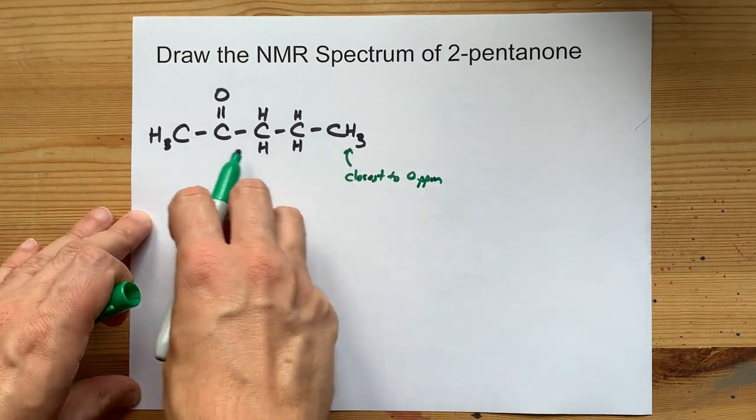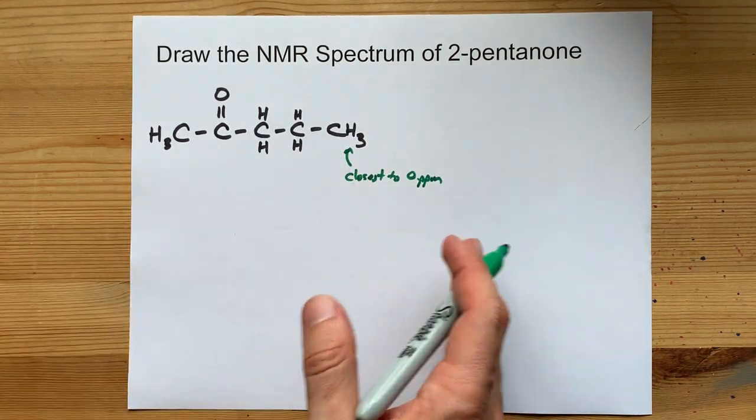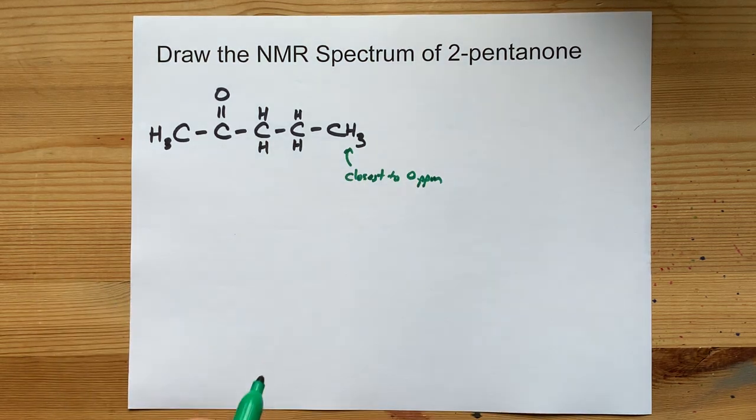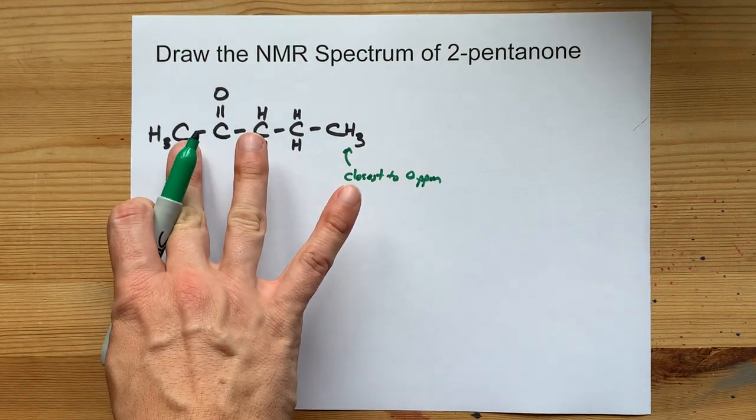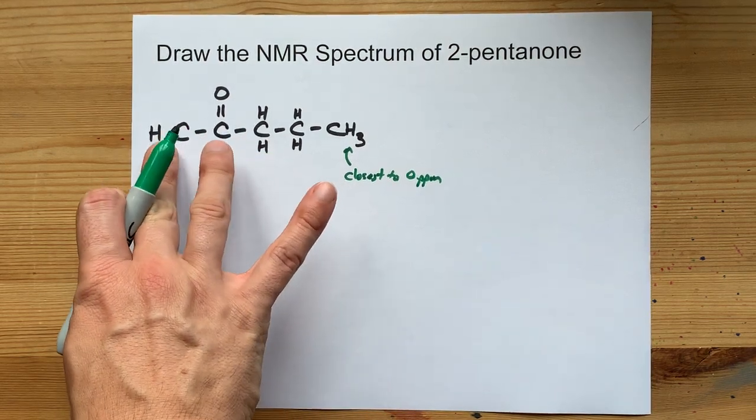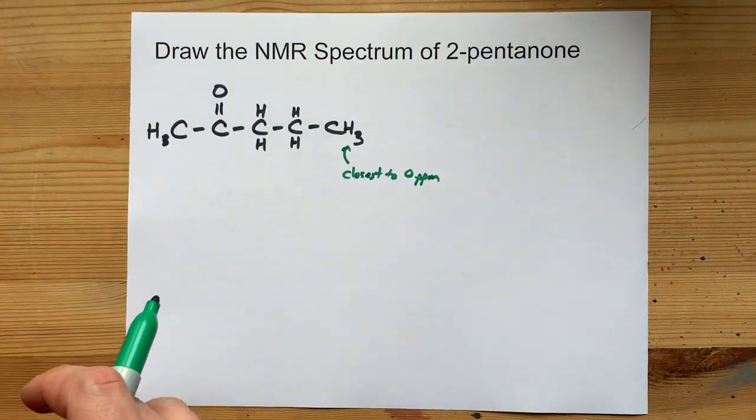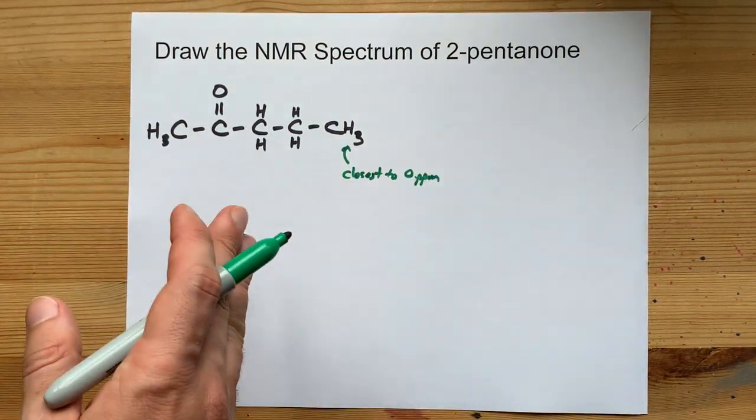And the closer you get to electronegative atoms, the farther away from 0 or the farther to the left you're going to end up going. It's actually really tough to tell which of these two, these three hydrogens or these three hydrogens are going to be furthest to the left or have the highest shift.